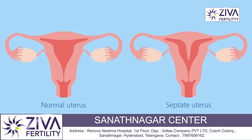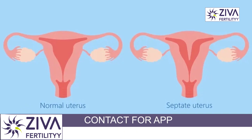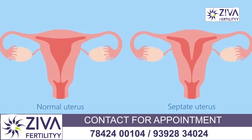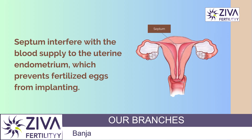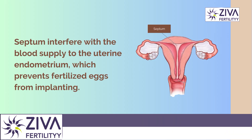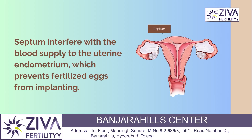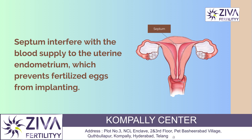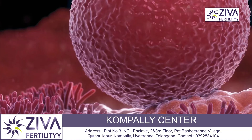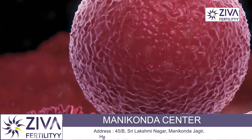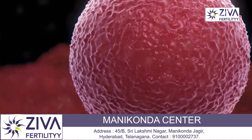A septate uterus can cause infertility in several ways. Firstly, the presence of the septum can prevent implantation of the fertilized egg by interfering with the blood supply to the endometrium, the inner lining of the uterus. This can make it difficult for the fertilized egg to attach itself to the uterine wall and establish a pregnancy.